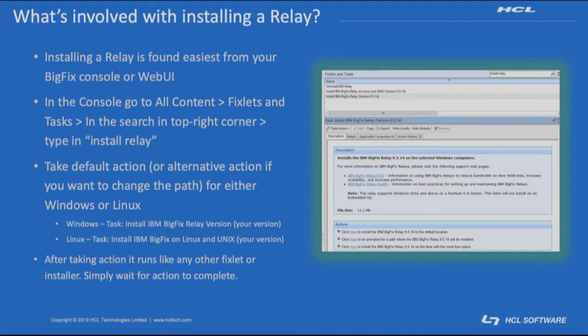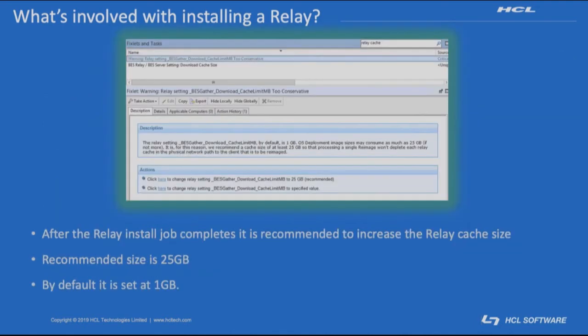Instead of taking a default action, you'll see other options beneath that. In this slide, you'll also notice that there is a relay install task for Linux and Unix systems — it doesn't just have to be Windows systems. Basically just send that action and wait for it to complete. After it completes, I do recommend taking this time to set the relay cache size using the fixlets depicted in the slide, simply because at the default size of one gigabyte, with the recent size of patching in general, one gigabyte can get swallowed up pretty easily. I recommend taking it up to 25 gigs using one of the two fixlets shown here.